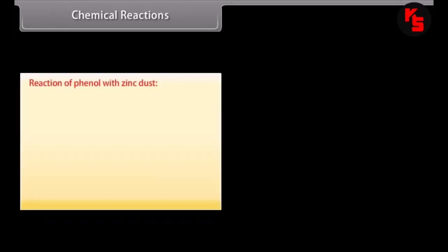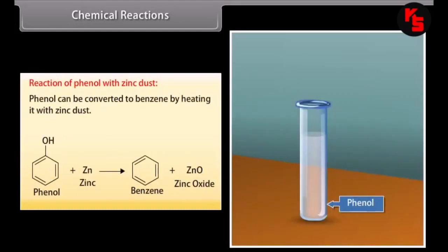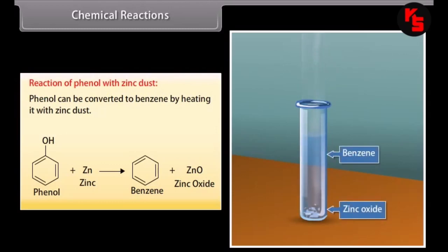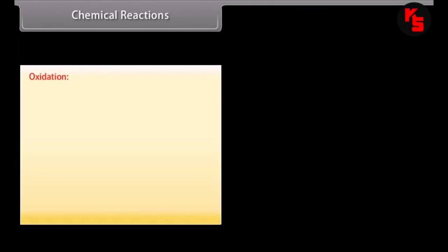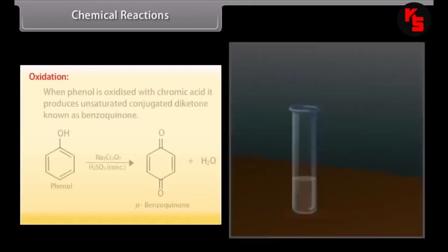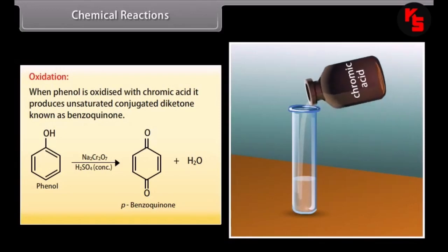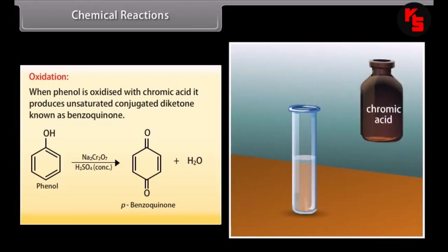Reaction of phenol with zinc dust: phenol can be converted to benzene by heating it with zinc dust. Oxidation: when phenol is oxidized with chromic acid, it produces an unsaturated conjugated diketone known as benzoquinone.